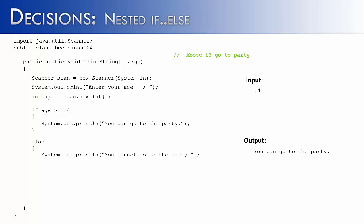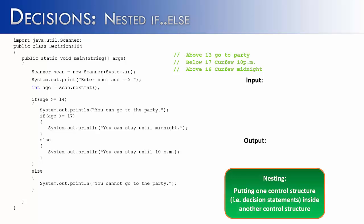Now this is not nesting, but we're building to that. Let's say if you can go to the party, I'm going to add another decision. If you're below 17, you have to come home by 10, or your curfew is set at 10. If you're above 16, your curfew is set at midnight. Nesting is simply putting one control structure, like if-else statements, inside another control structure.